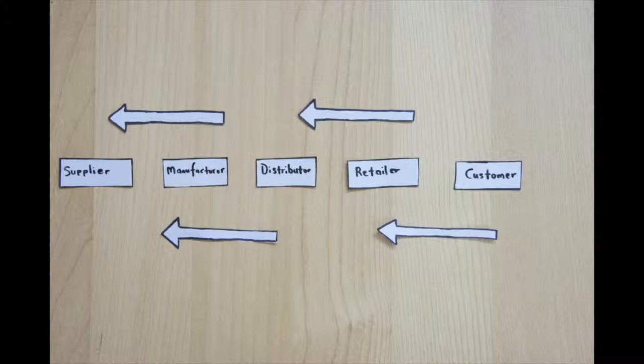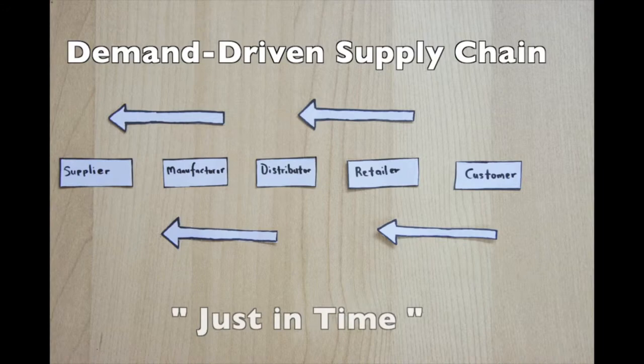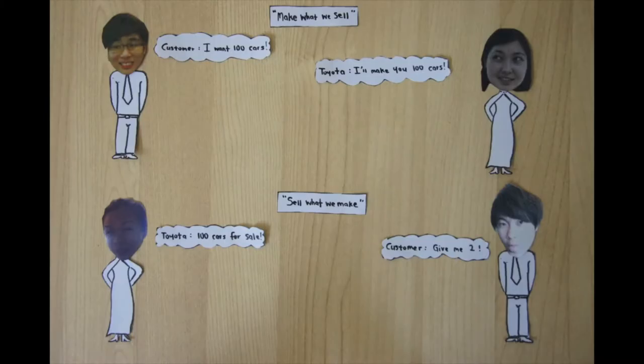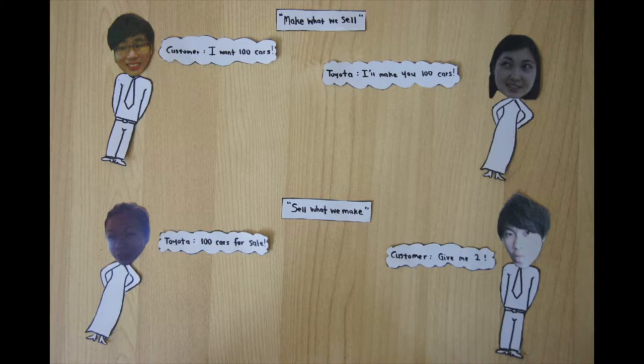Its component is technology. Toyota uses the pull-based model which is under the demand-driven supply chain concept. They name this system of theirs just in time. The main idea of this model is to make what we sell and not sell what we make.